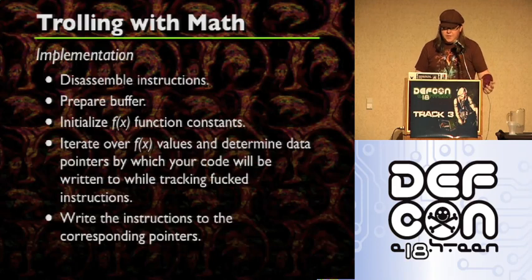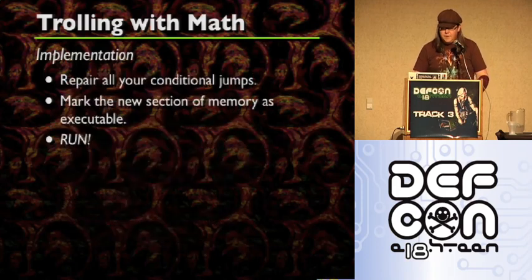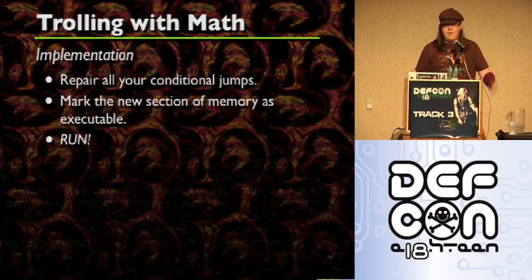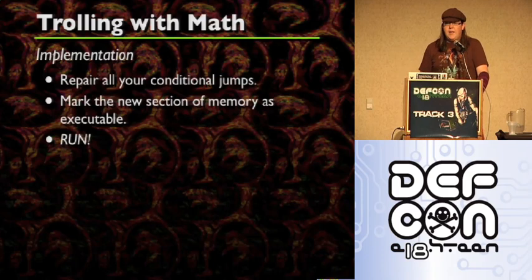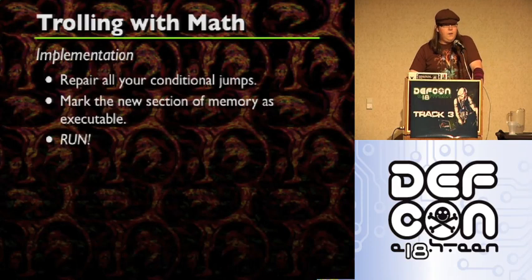With all that, write the instructions to the corresponding pointers that you've created. Then you're going to want to repair all your conditional jumps, mark the new section of memory as executable, then you run it. And assuming that everything worked out fine and everything is pointing at the right place, weird things happen when this gets all messed up.